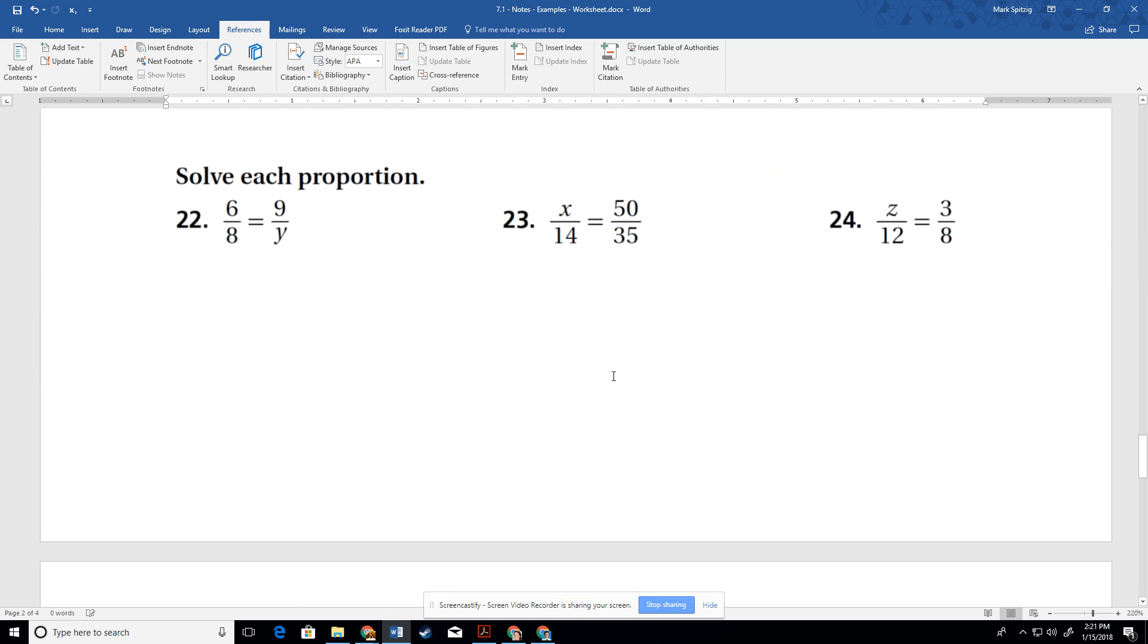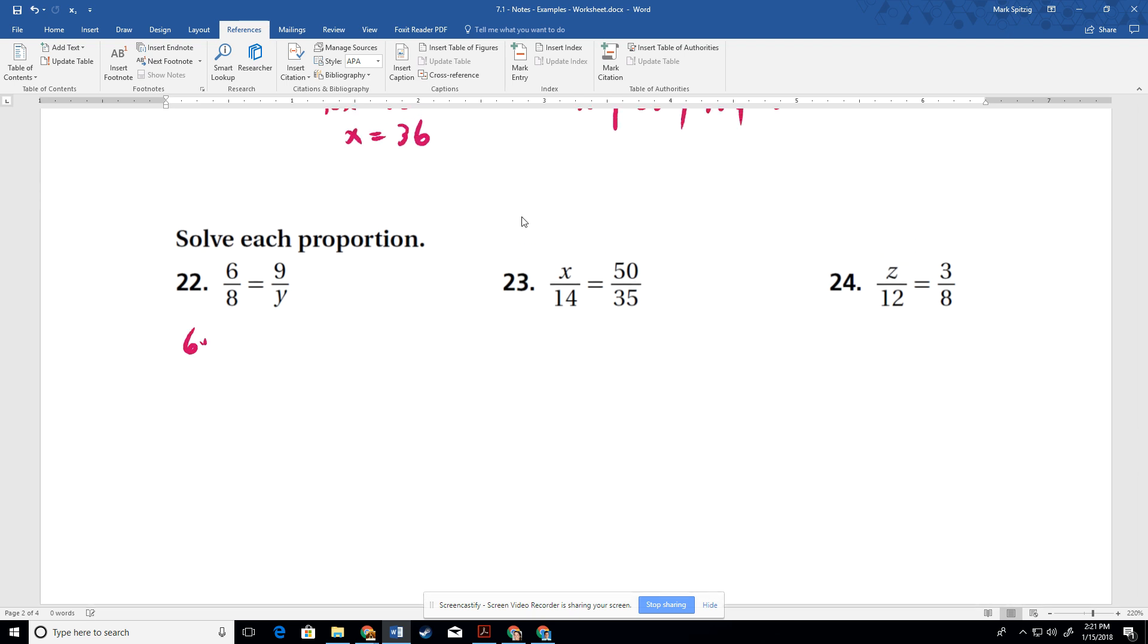Okay. A couple more proportions we got to solve. All right. So we get 6y equals 72. And so then we get y is 12. Awesome. Cross multiply 35x equals 14 times 50 is 700. Divide that by 35 and we get 20. All right. So we get 8Z equals 36. All right. So Z is going to be, I think that's 4.5. Okay, cool.